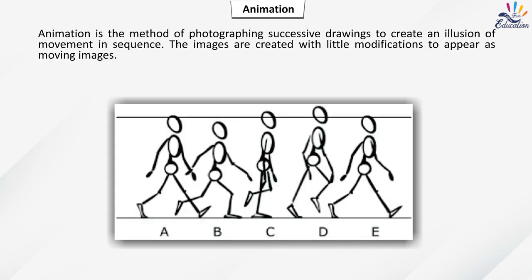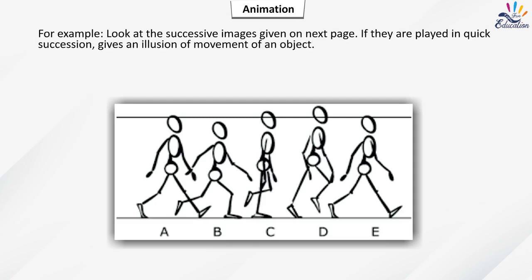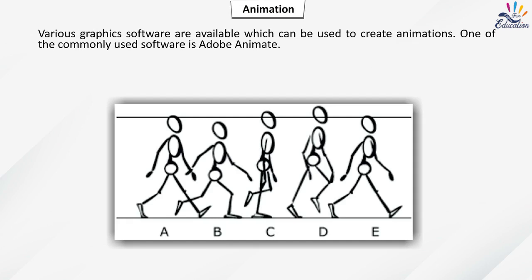Animation is the method of photographing successive drawings to create an illusion of movement. The images are created with little modifications to appear as moving images. Various graphics software can be used to create animations, and one of the most commonly used is Adobe Animate.